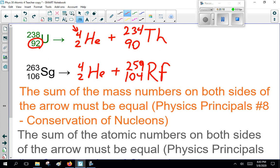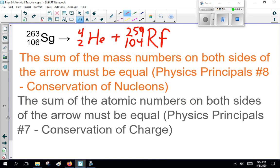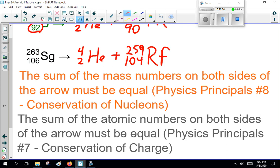Now, note the sum of the mass numbers on both sides of the arrow must be equal. That's physical principles number eight, conservation of nucleons. And, the sum of the atomic numbers on both sides of the arrow must be equal. Physics principles number seven, conservation of charge. So, you could ask what physics principles you're doing. Conservation of nucleons and conservation of charge.